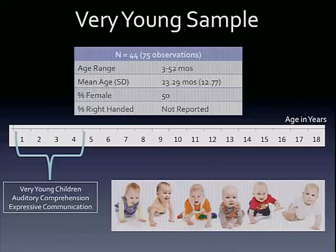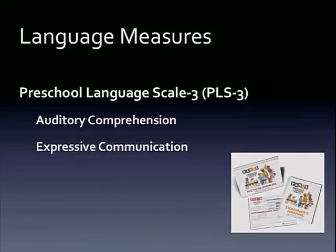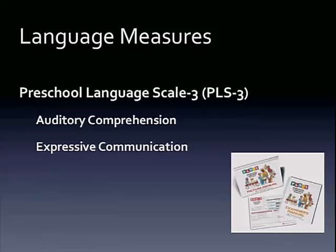These are three to 52-month-olds, mean age of 23 months, and about 50% female. We don't have handedness because they're just too little to have handedness preferences. The measures we used for this sample — they administered the Preschool Language Scale, Third Edition. This looks at auditory comprehension and expressive communication skills — two subscales on this test. They measure even pre-linguistic abilities, so you can look at very young infants all the way up to older children, capturing early pre-linguistic skills and language comprehension as it develops.